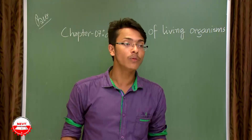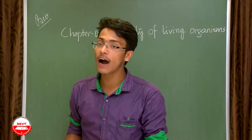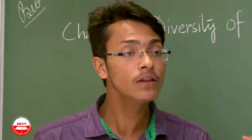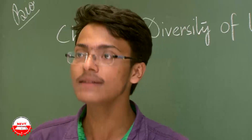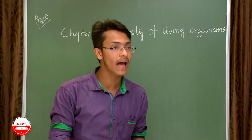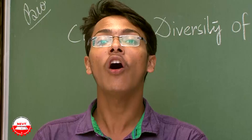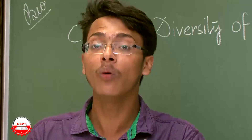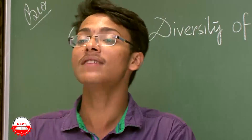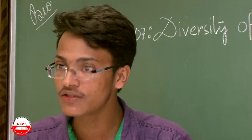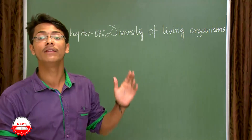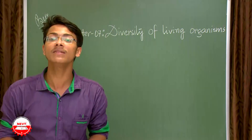So we can conclude from these questions that all the animals and all the organisms present around us can bear similarities as well as dissimilarities to each other on the basis of their own characteristics. Now we are going to start a very interesting chapter of biology that comes under your SA2 course — that is Diversity of Living Organisms, Chapter Number 7.